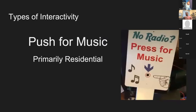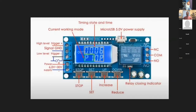Let's talk about some different types of interactivity. The push button for music is primarily for a residential install. You'll notice similarities between a lot of these things people use for interactivity in their display. In this case we have a relay, and a relay is really at the heart of a lot of interactivity.